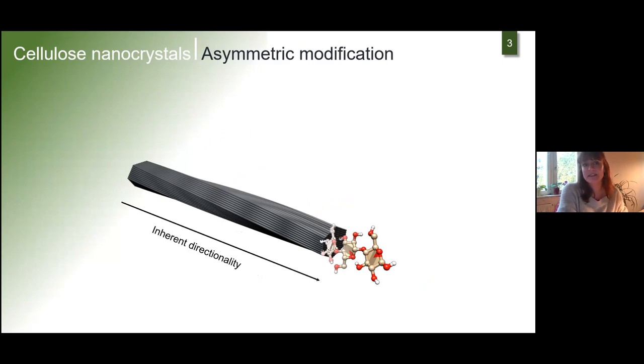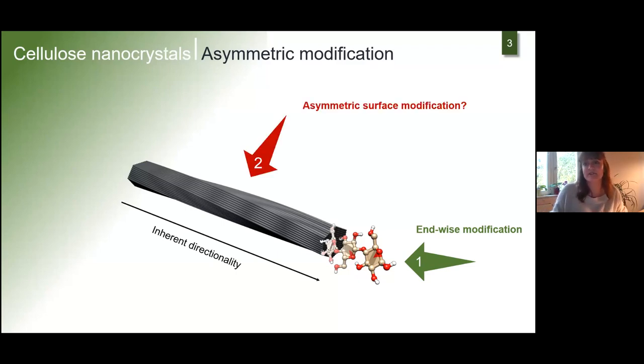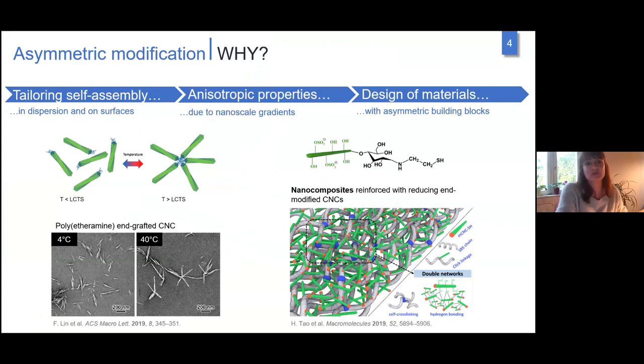Today it's about asymmetric modification. How can we do this? One obvious way, especially for cellulose I nanocrystals, is to exploit the inherent directionality and modify them on the reducing end side by end-wise modification. This topic has gained lots of attention throughout the last years. Maybe there's another way to introduce functionalities from the surface.